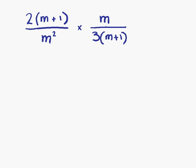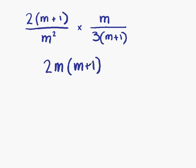Example 3: we have 2 brackets (m plus 1) over m squared, multiplied by m over 3 brackets (m plus 1). Multiplying the numerators first, we get 2m bracket (m plus 1). On the denominators, we have m squared times 3 bracket (m plus 1), which gives us 3m squared (m plus 1). It doesn't matter what order we multiply in.